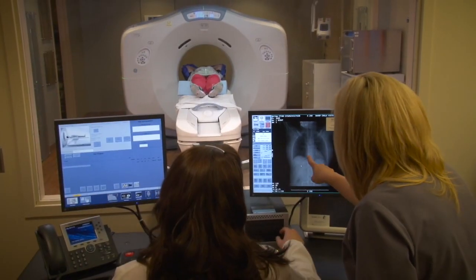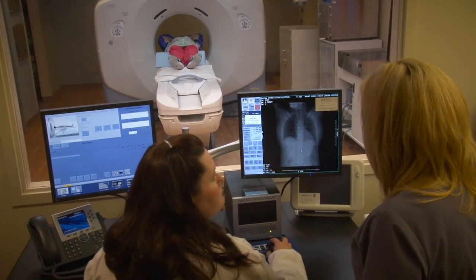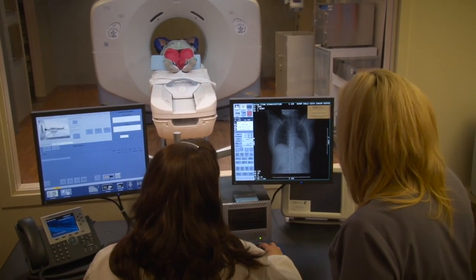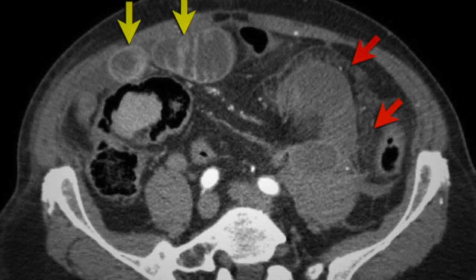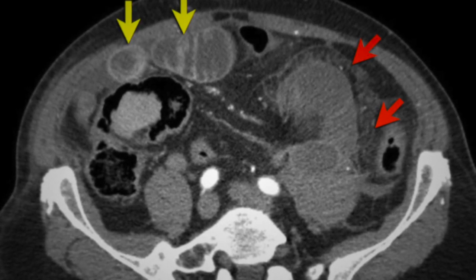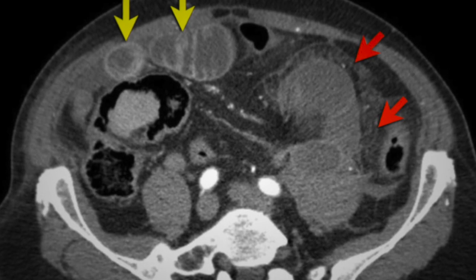The CT simulator does not deliver the radiation treatment. It does, however, allow the radiation oncologist and physics staff to see the area being treated. A CT scan is basically a three-dimensional x-ray. We use the output to create or construct a virtual 3D image of the scanned area. The team uses this image to develop a treatment delivery plan — the best and most precise plan for you.